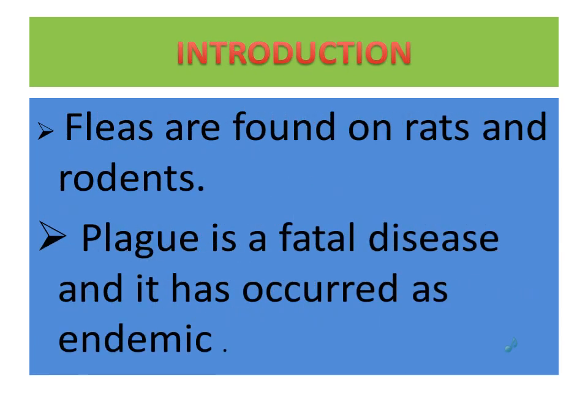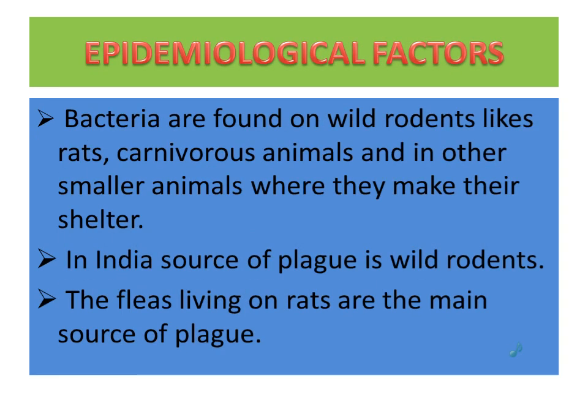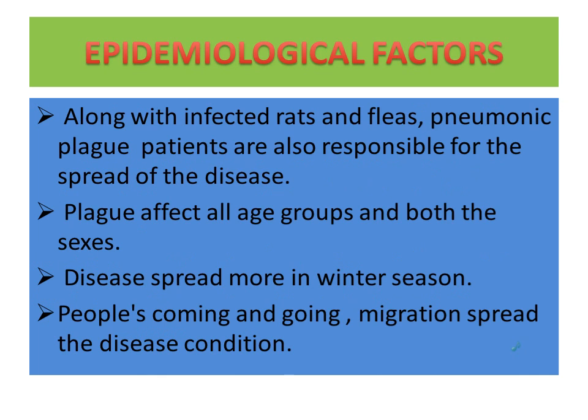Plague is a fatal disease and it has occurred as endemic. Epidemiological factors: bacteria are found on wild rodents like rats, carnivorous animals, and other small animals where they make their shelter. In India, the source of plague is wild rodents. The fleas living on rats are the main source of plague, along with infected rats and fleas.